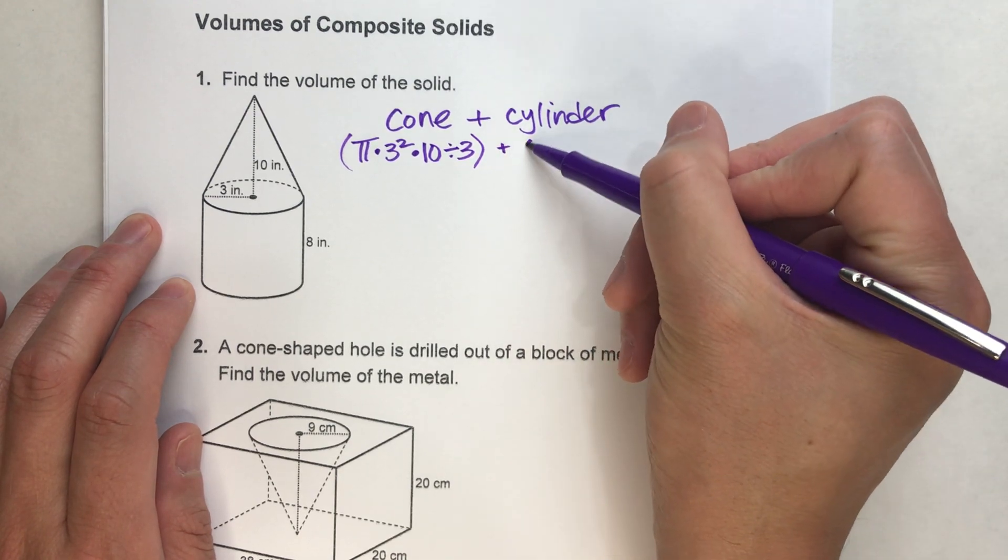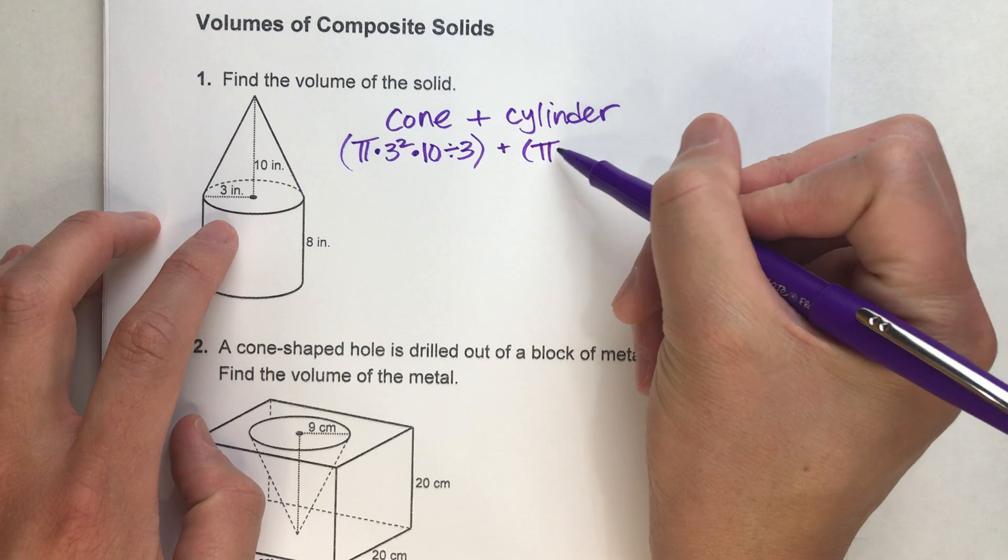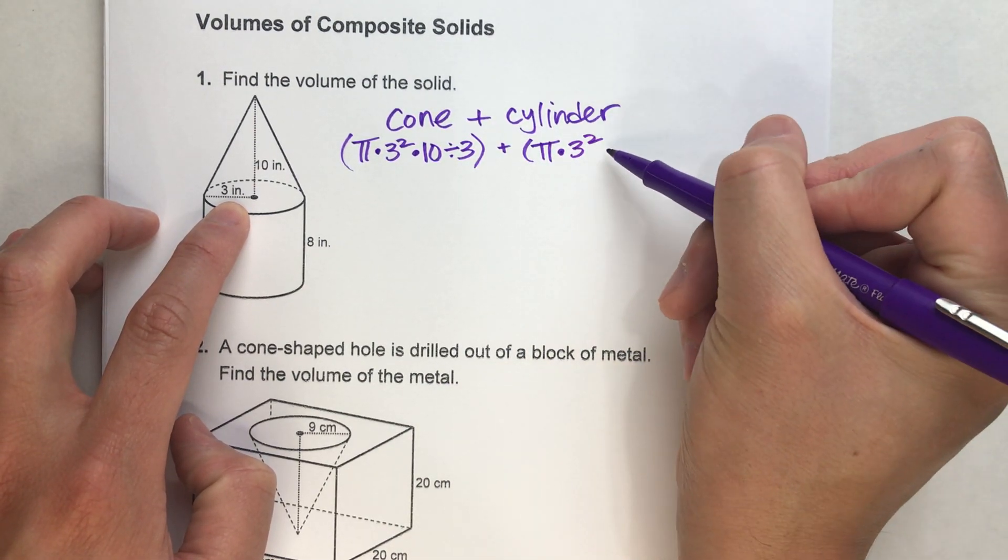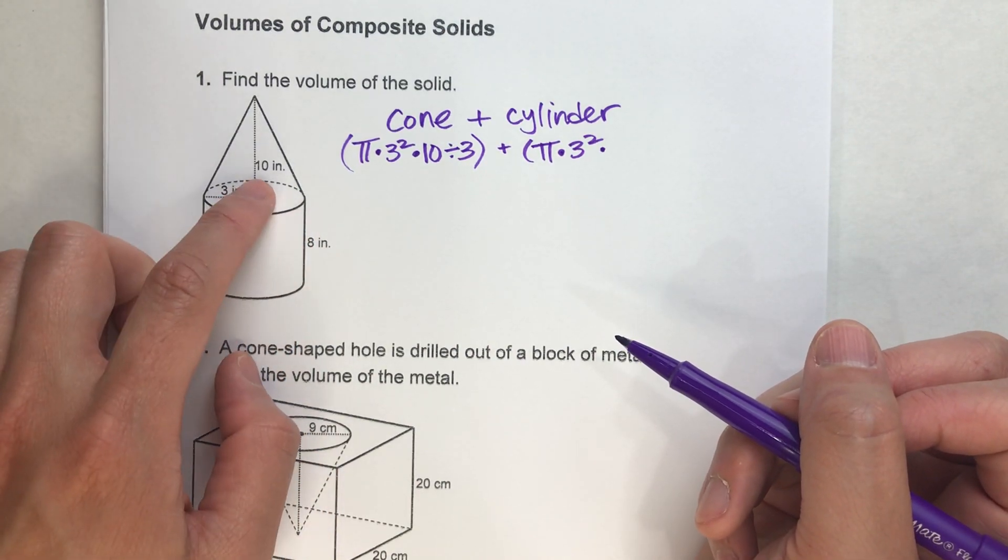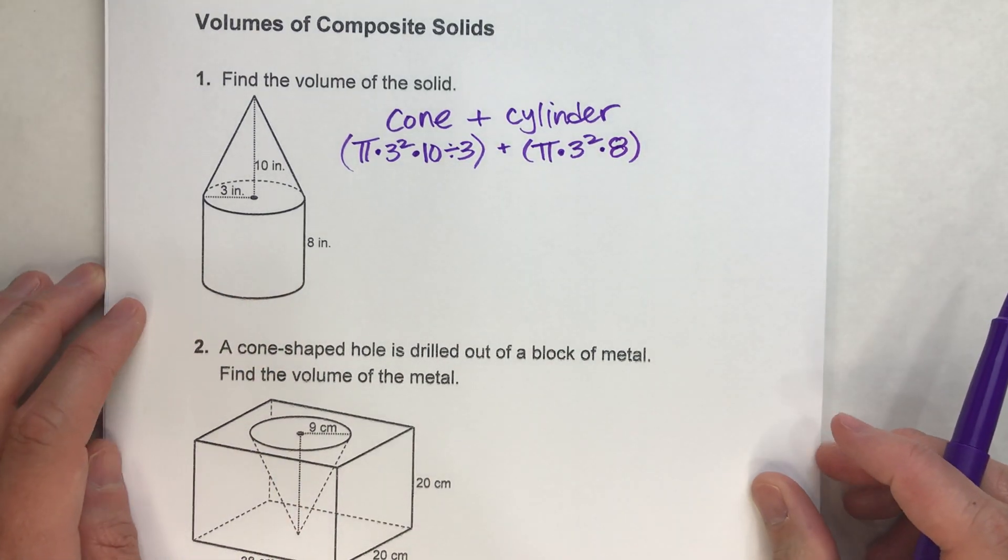Now for the cylinder, the volume formula is pi times the radius squared times the height of the cylinder. And notice the cylinder's height is different than the cone's height.